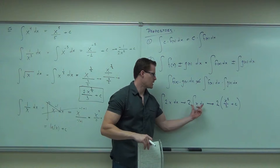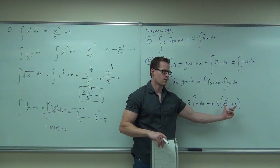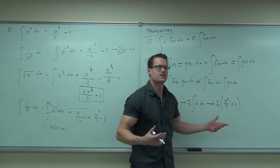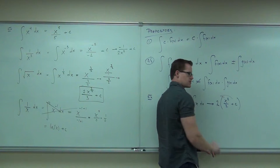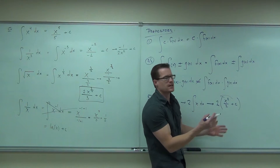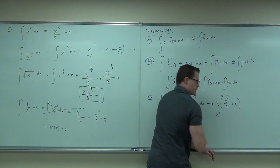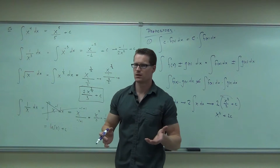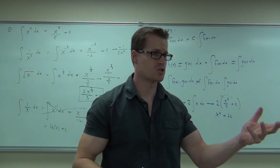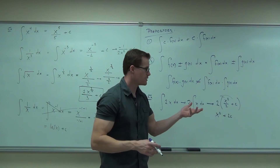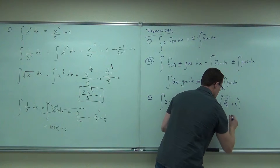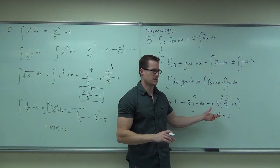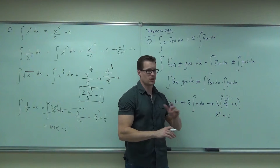You have the 2 multiplied by x squared over 2 plus c. For those who put the plus c immediately inside, what do you really get? You get x squared plus 2c. However, 2 times a constant is just another constant, so it doesn't matter that it's 2c — it's just c. That's why you have options: you can put plus c immediately and be careful, or just ignore it and put it at the very end of your problem.